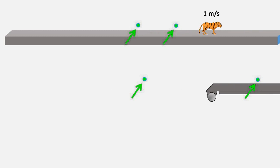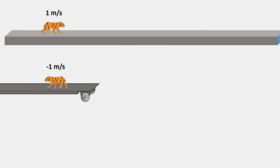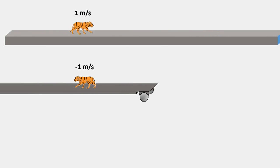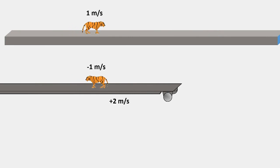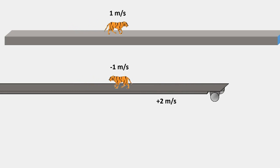If another tiger walks with a velocity of one meter per second towards the left, which we'll define as negative one meter per second, on a platform which has a velocity of two meters per second towards the right, which we'll define as positive two meters per second,